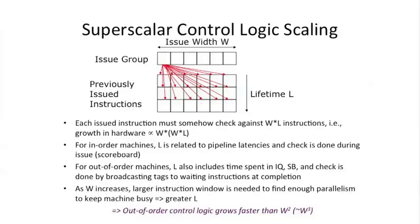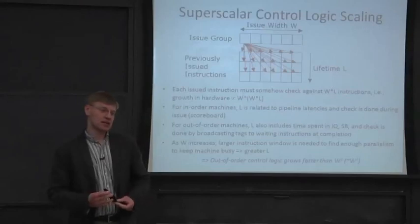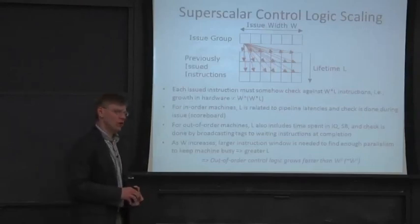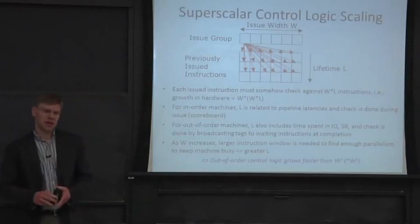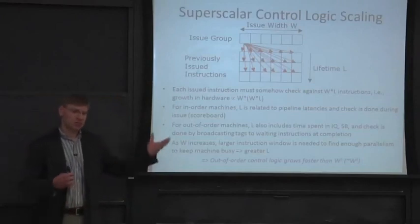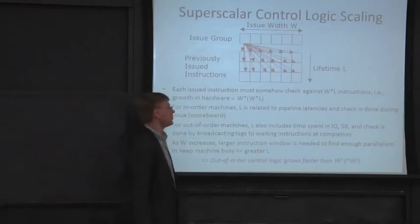Now let's start talking about Very Long Instruction Word Processors. We've been talking about superscalar processors, which have a fair amount of complexity, especially out-of-order processors. Where does this complexity come from, and can we remove all that complexity? That's what we're going to be talking about today.